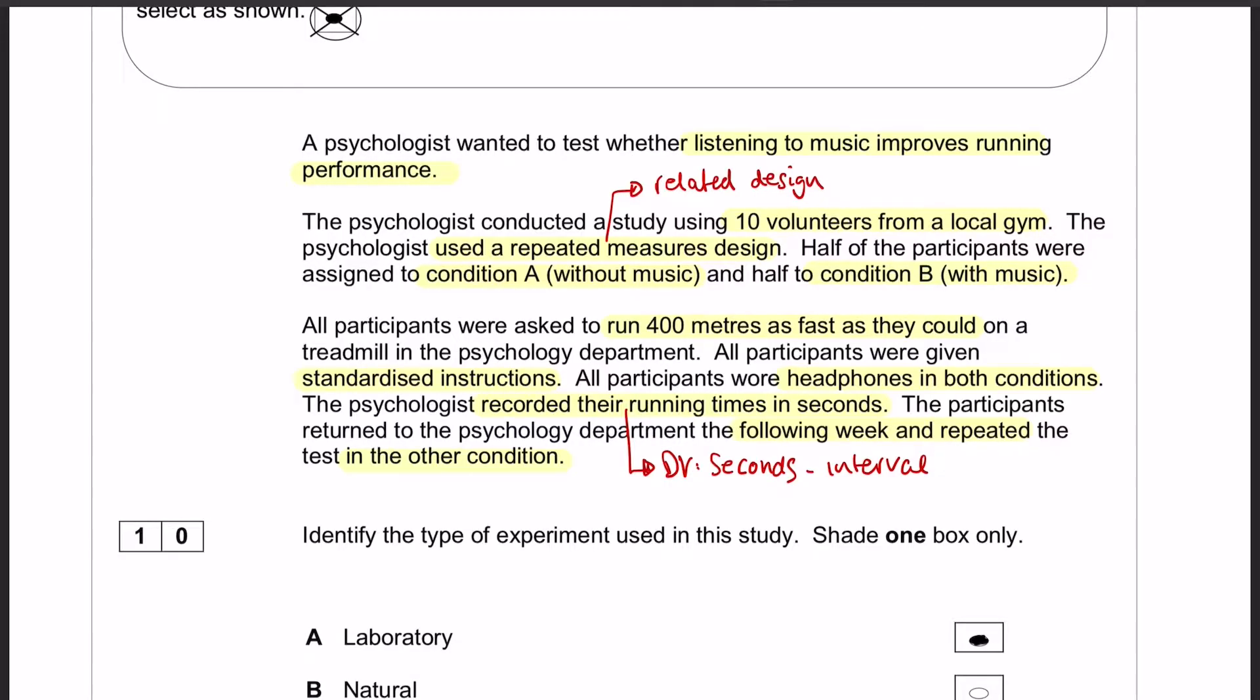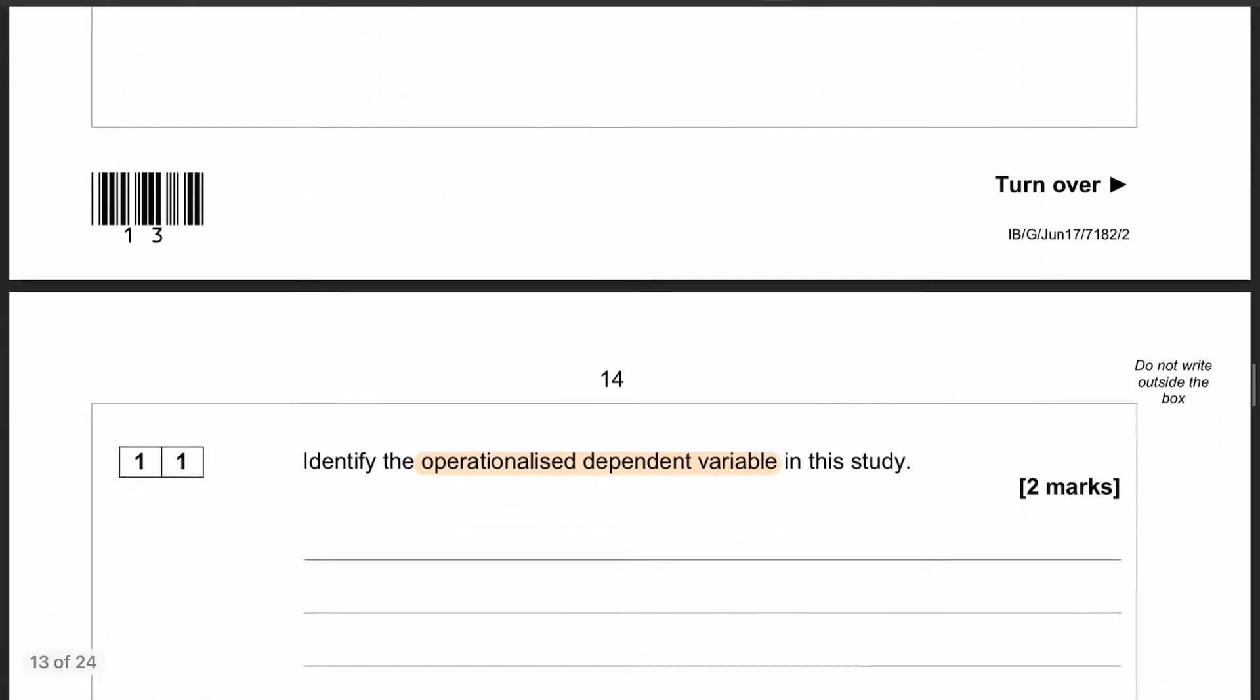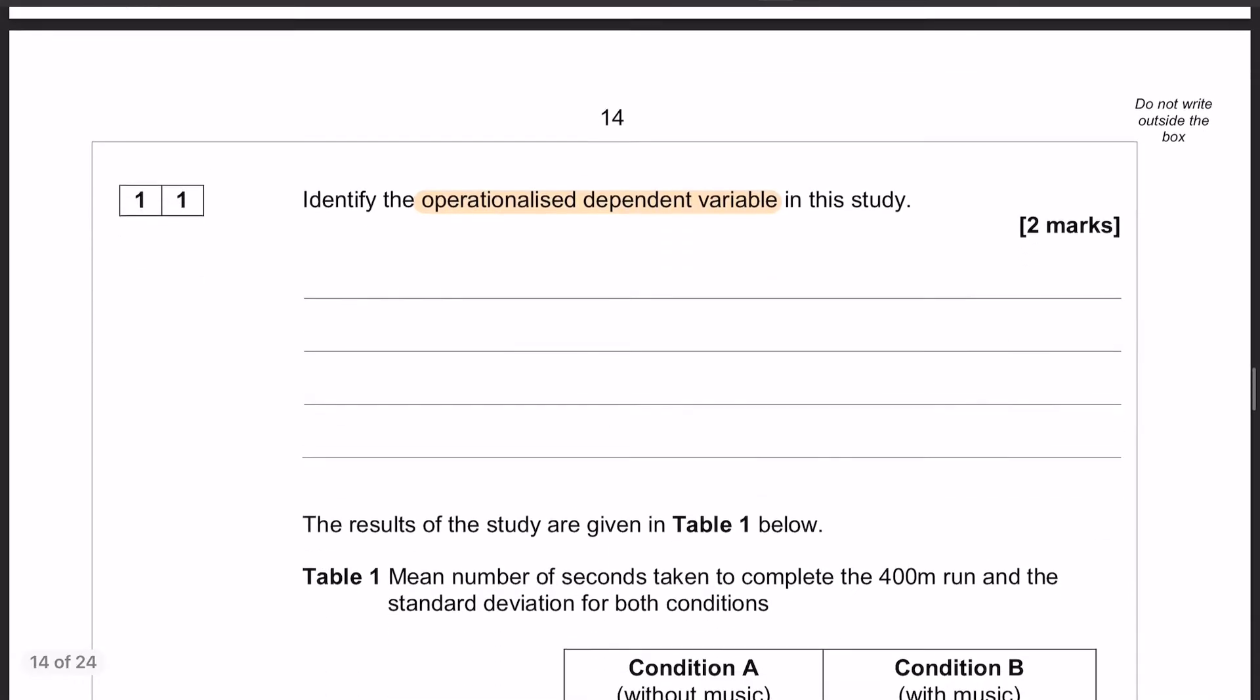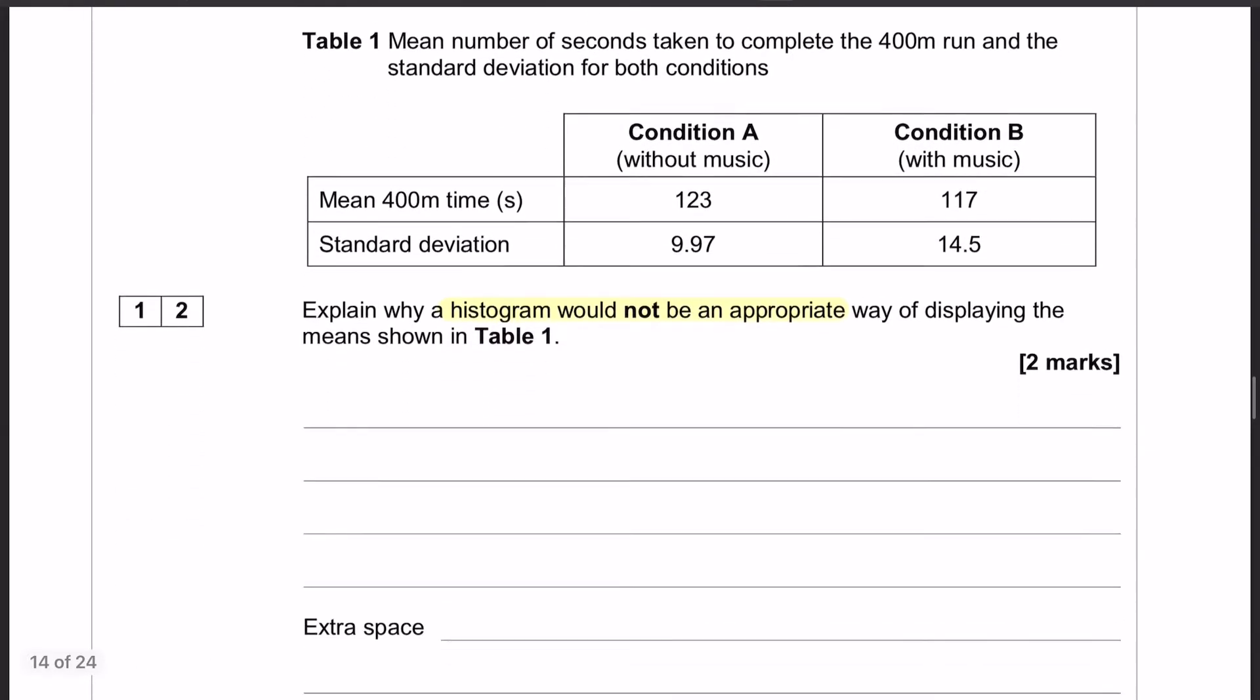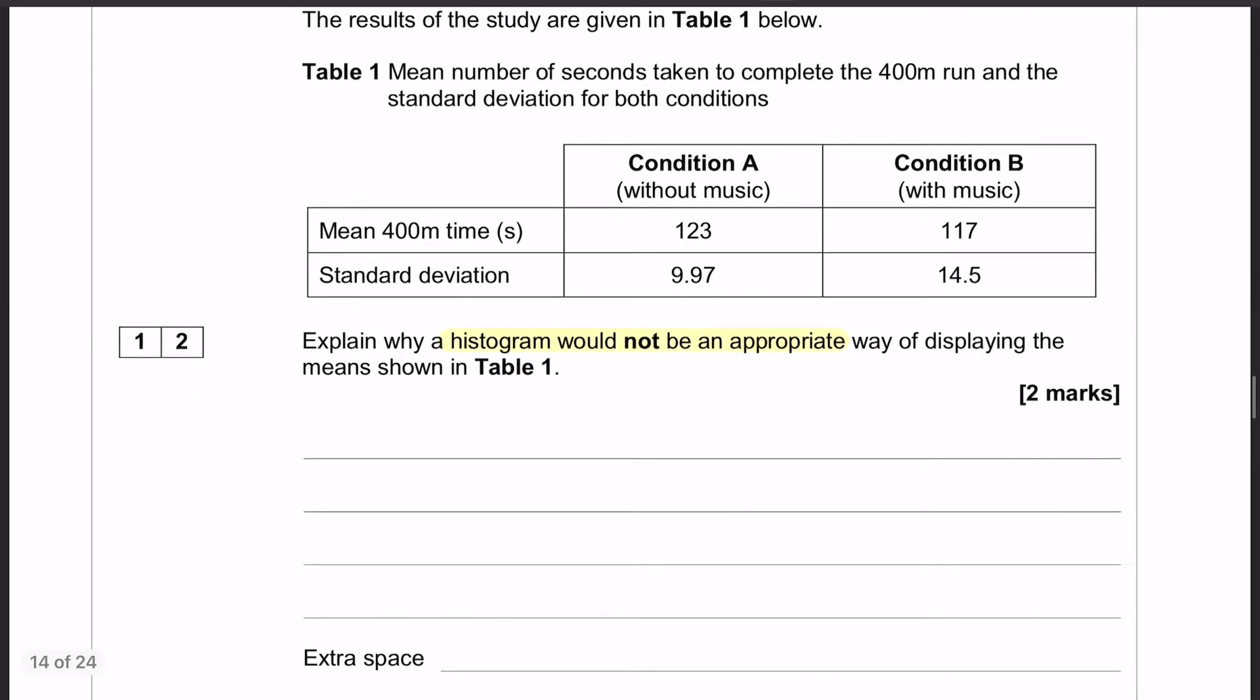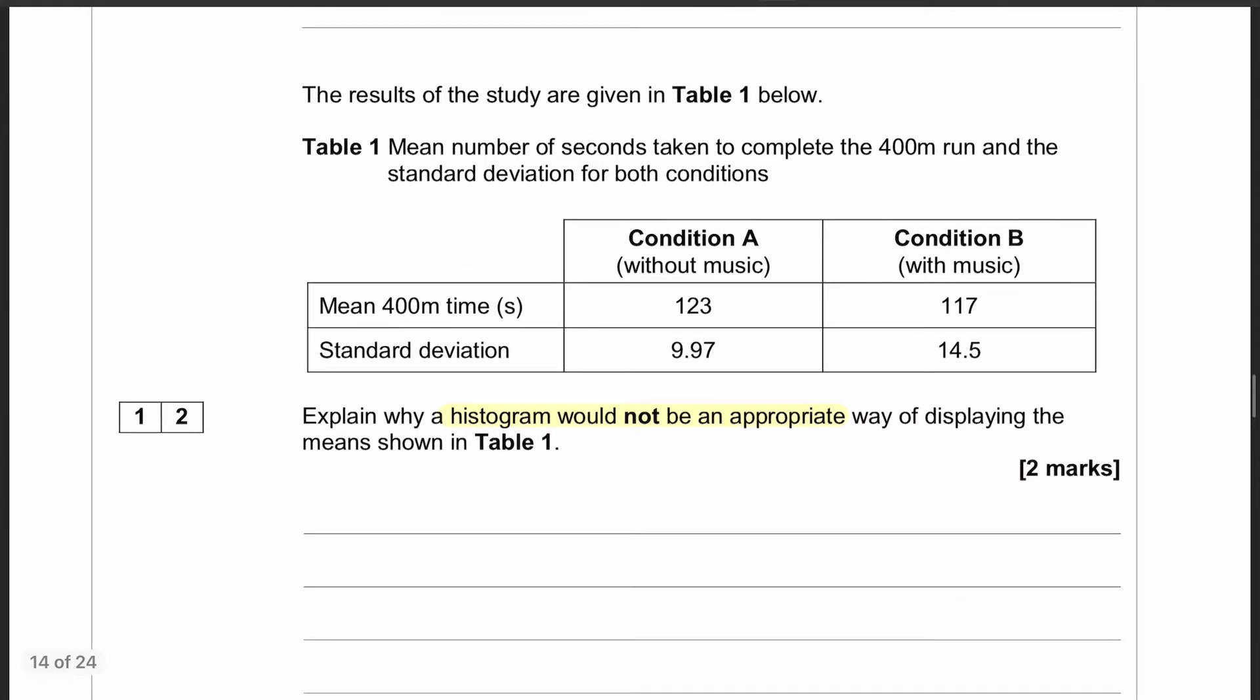We have question number 11, which is identify the operationalized dependent variable in this study. We'll come back to that one in a minute. Question number 12 is explain why a histogram would not be an appropriate way of displaying the means shown in table number one.